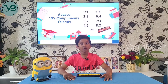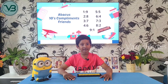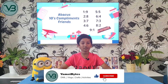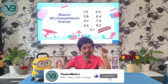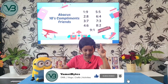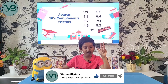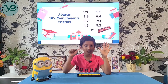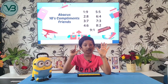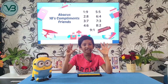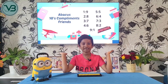We have to split 10 into 2 numbers to get friends in 10 complements: 1 and 9, 2 and 8, 3 and 7, 4 and 6, 5 and 5, 6 and 4, 7 and 3, 8 and 2, 9 and 1. These are friends in 10 complements.